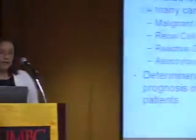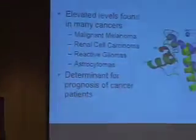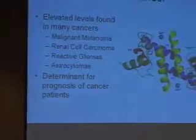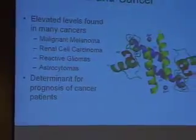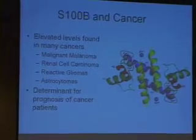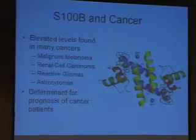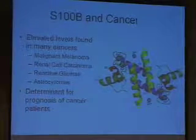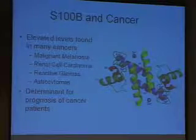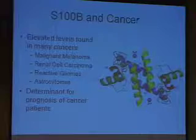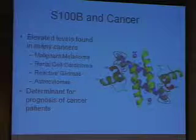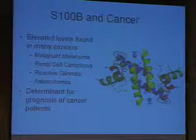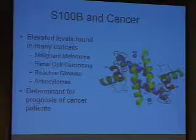S100B is a homodimer protein found elevated in many different forms of cancer, including malignant melanoma, venous cell carcinomas, et cetera. In these cancers especially, S100B is used as a determinant for prognosis in a cancer patient in a clinical setting.